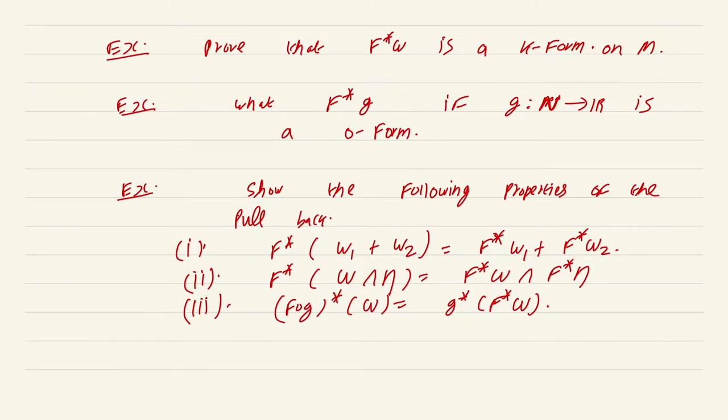These exercises address basic properties of the pullback, but we are still no closer to proving that the pullback will be a smooth form. And it is not yet clear how pullbacks are going to address the original question of how to check whether a form on a manifold is smooth. So let us first try to understand how this pullback behaves in Euclidean space, since the definition of a form on a manifold was obtained by passing to an open set in R^n via parameterization.